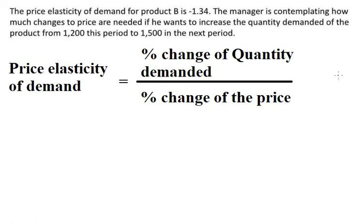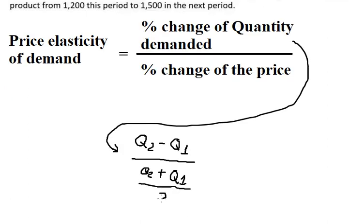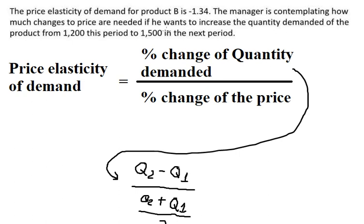We have the formula here: quantity number two minus quantity number one, over quantity number two plus quantity number one over two. Quantity number two is 1,500, quantity number one is 1,200.